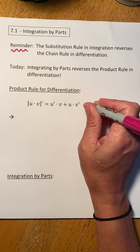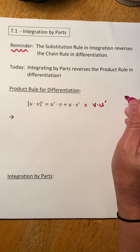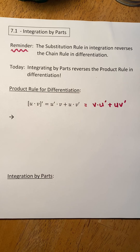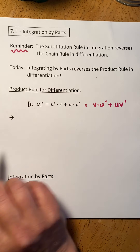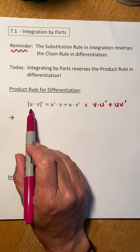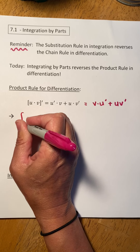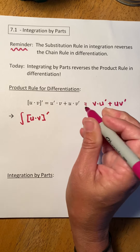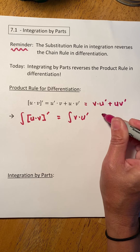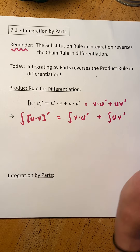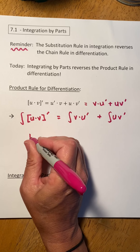Just for the sake of convenience, I'm going to switch this and call it v·u′ + u·v′ for a minute. Then I'm going to integrate both sides. So if the derivative of u·v is v·u′ + u·v′, then the integral of the derivative of u·v is just u·v — the integral and derivative undo each other.